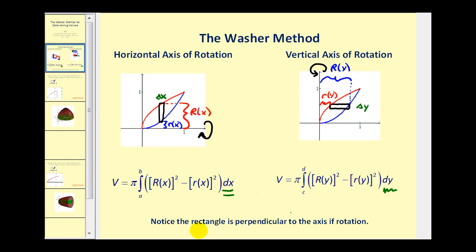Let's start with a quick review. To use the Washer method, it's important to sketch a representative rectangle that is perpendicular to the axis of rotation. So if we have a horizontal axis of rotation, a rectangle would look like this. And since the width of the rectangle is delta x, we integrate with respect to x, as we see here.